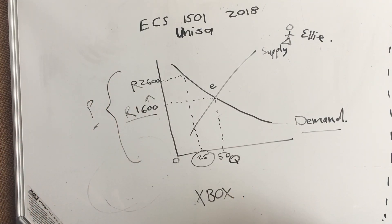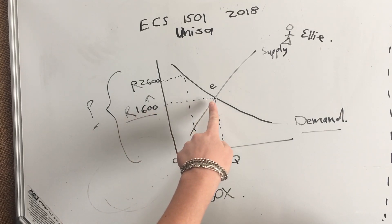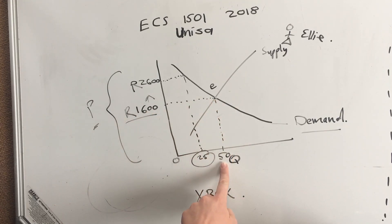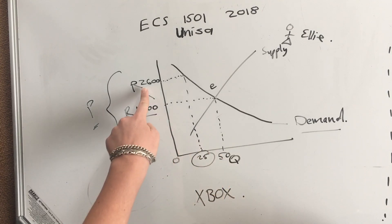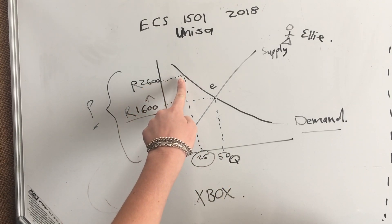That should be easy enough to understand. At 1600 rand, we take all the way through to the demand curve—that's for 50 people. At 2600 rand, the demand curve all the way down is 25 people.